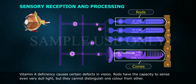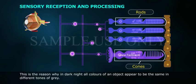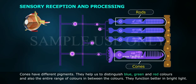Vitamin A deficiency causes certain defects in vision. Rods have the capacity to sense even very dull light, but they cannot distinguish one color from another. This is why in dark night, all colors of an object appear to be the same in different tones of grey. Cones have different pigments and help us to distinguish blue, green, and red colors, as well as the entire range of colors in between. They function better in bright light.